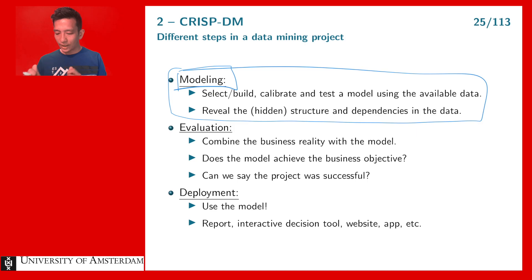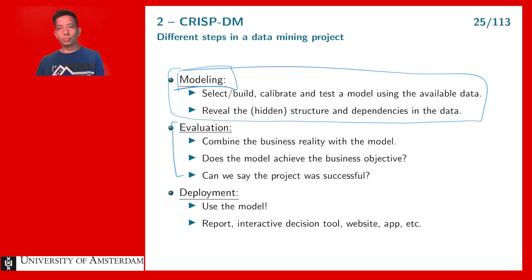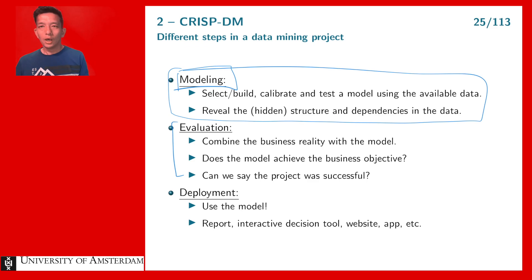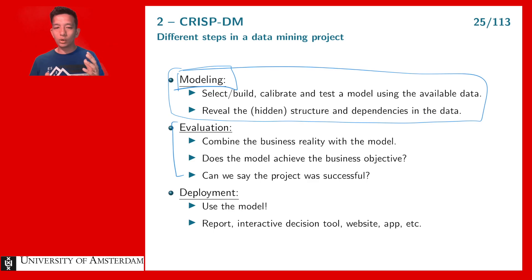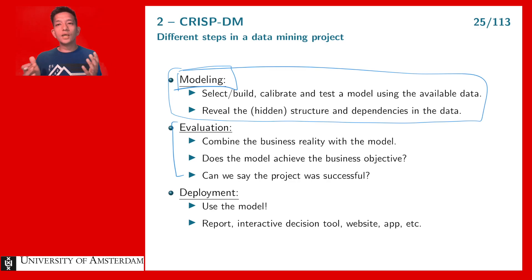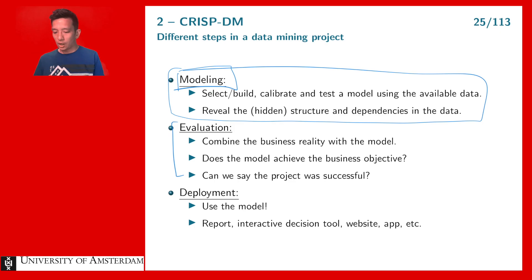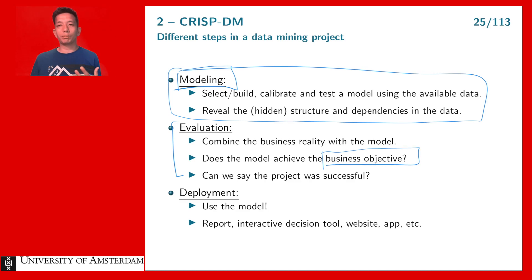Step five is the evaluation. You have built your model, results look good, and predictions seem accurate. In the evaluation phase you go back to business reality — back to what the business problem is and whether you actually solved it. You might have a good model, but if it's not useful for the business problem, that matters. In the evaluation phase, you check whether you reached your business objective and determine whether the project was successful.